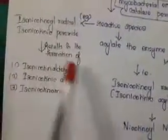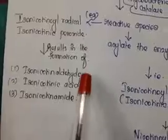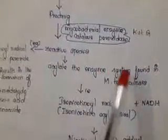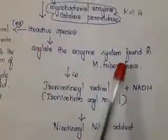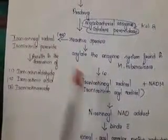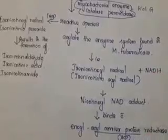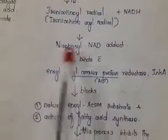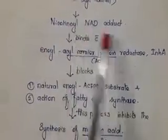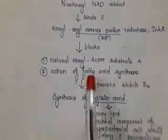These reactive species result in the final products: isonicotinaldehyde, isonicotinic acid, and isonicotinamide — that is aldehyde, acid, and amide derivatives. The reactive species, particularly the isonicotinoyl radical (also called isonicotinic acyl radical), combine with NADH to form an adduct called the nicotinoyl-NAD adduct. That adduct binds with enoyl acyl carrier protein reductase, otherwise called InhA.